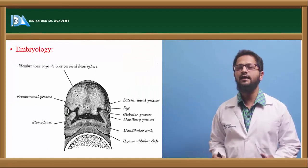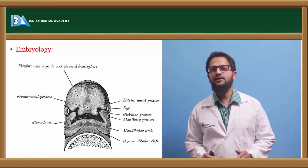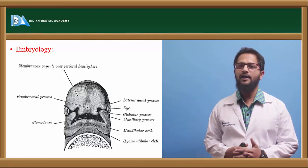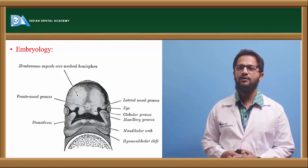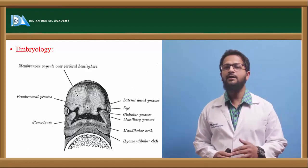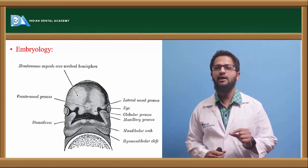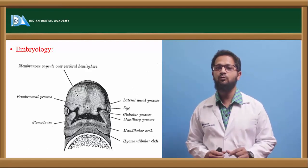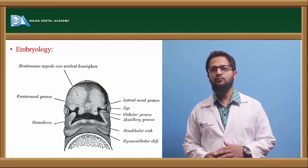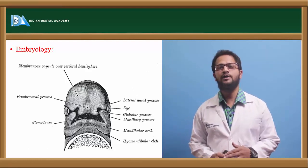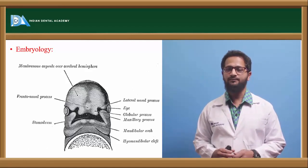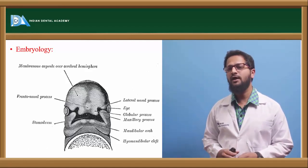Before going into detail about cleft lip and palate, let us first have a brief introduction on embryology. At about the 4th week of intrauterine life, a prominent bulge is seen on the ventral aspect of the developing embryo. This is nothing but the developing forebrain. Below the brain, a small shallow depression is seen which is called the stomodium. The stomodium is nothing but the future mouth.